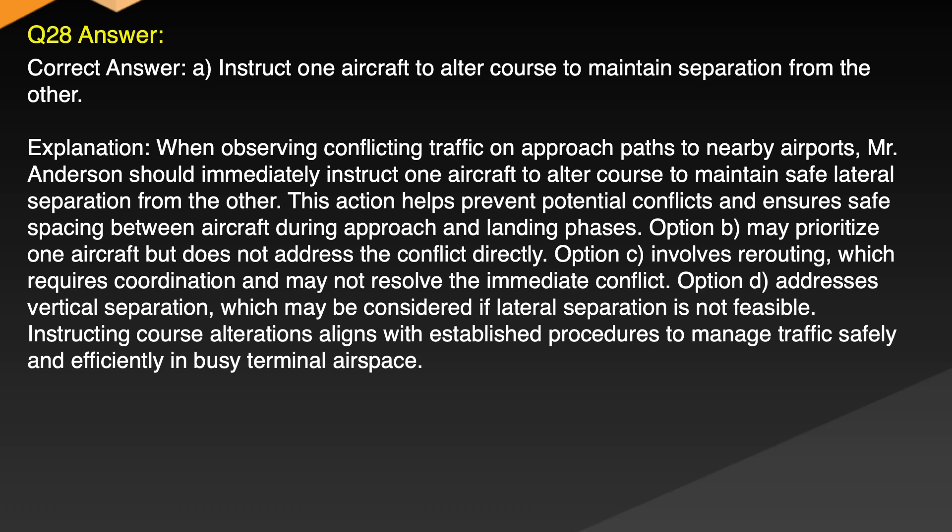Explanation: When observing conflicting traffic on approach paths to nearby airports, Mr. Anderson should immediately instruct one aircraft to alter course to maintain safe lateral separation from the other. This action helps prevent potential conflicts and ensures safe spacing between aircraft during approach and landing phases. Option B may prioritize one aircraft but does not address the conflict directly. Option C involves routing which requires coordination and may not resolve the immediate conflict. Option D addresses vertical separation, which may be considered if lateral separation is not feasible. Instructing course alterations aligns with established procedures to manage traffic safely and efficiently in busy terminal airspace.